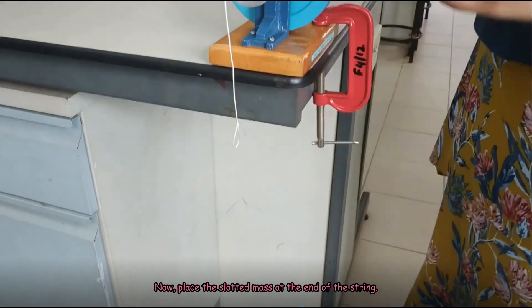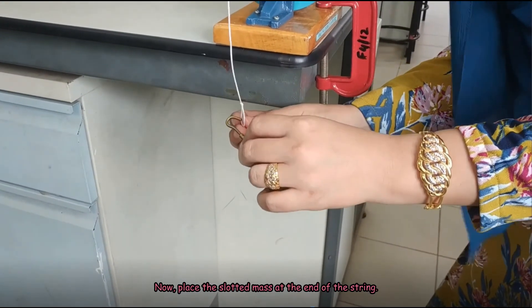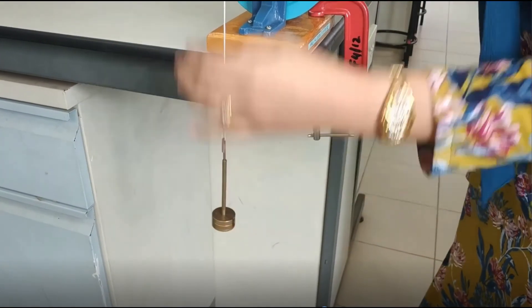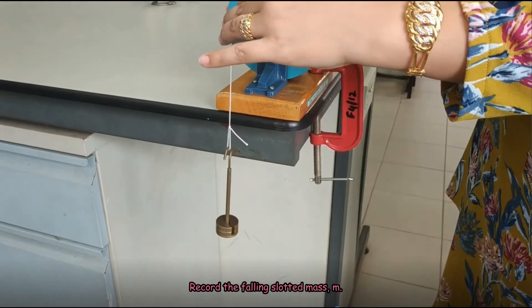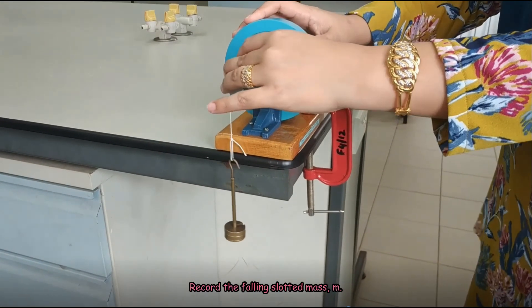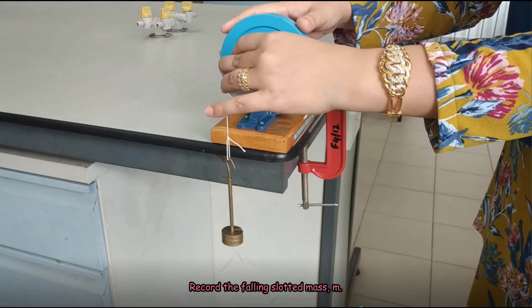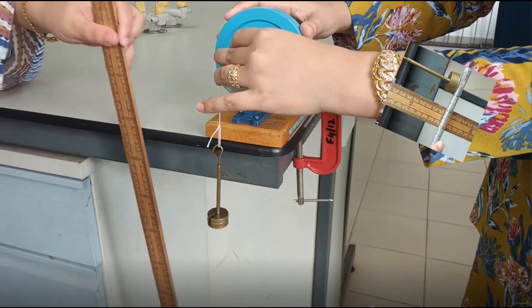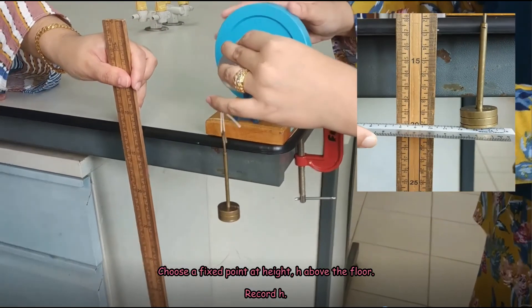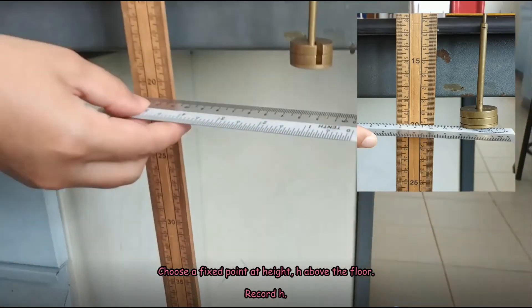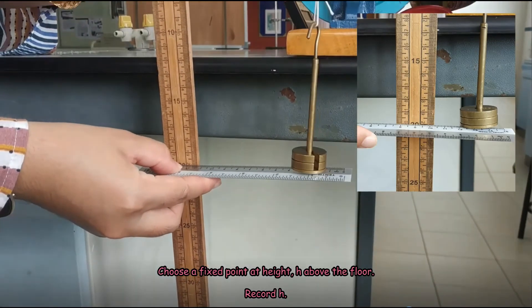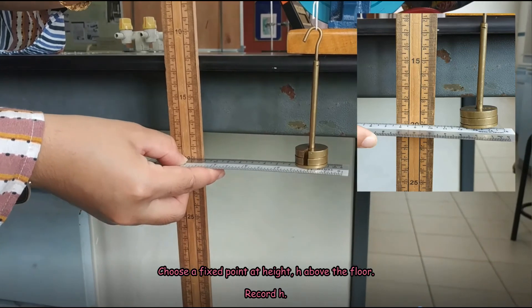Place the slotted mass at the end of the string. Record the falling slotted mass, M. Choose a fixed point at height h above the floor. Record h.